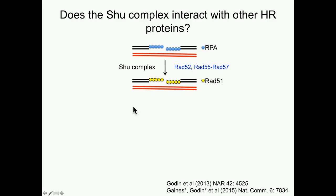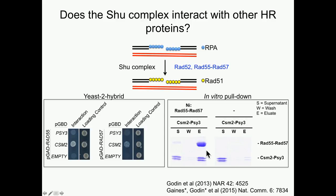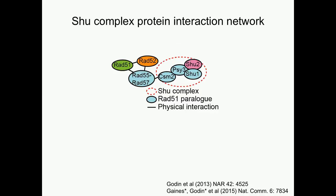We then asked whether the SHU complex proteins could interact with other proteins that bind the same types of structures, such as RAD52, RAD55, and RAD57. By yeast two-hybrid, we find that CSM2 exhibits an interaction with RAD55 and also with RAD57. In collaboration with Patrick Sung at Yale, we showed that CSM2 and PSY3 directly interact with RAD55 and RAD57. Based on these experiments, we created a SHU complex interaction network where RAD55 and RAD57 bridge an interaction between the SHU complex and the other RAD51 mediators.